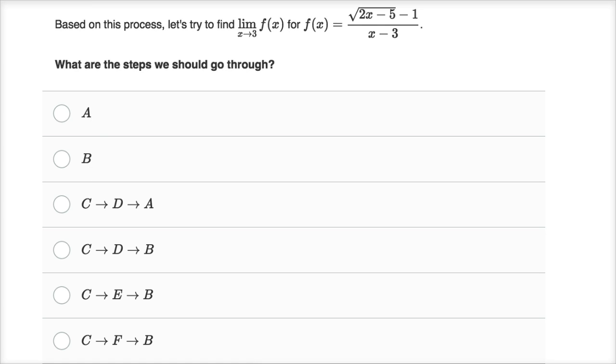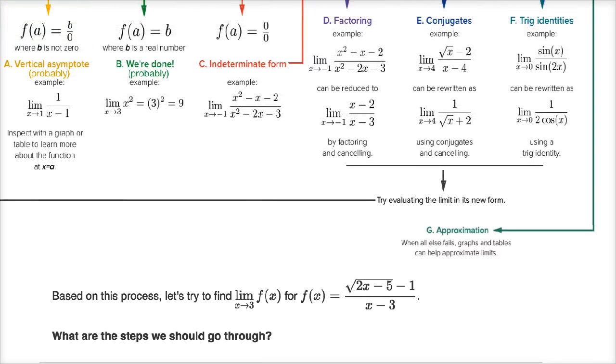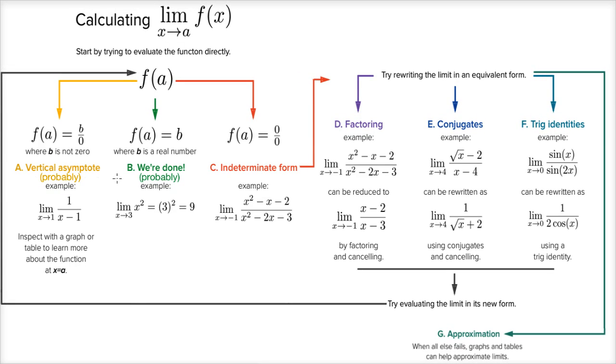And they have these various steps. You might say, what is A and B and C, D and A? Well, if you go back to the original flowchart, you see this is A, this is B, this is C, this is D, et cetera.